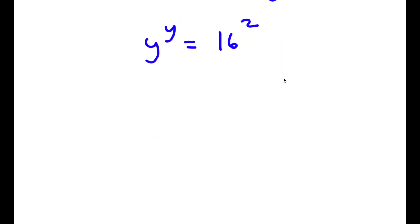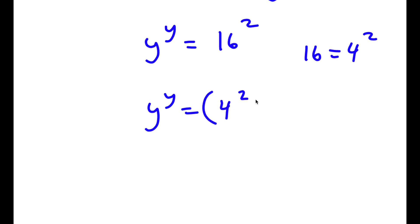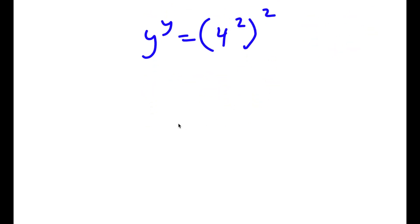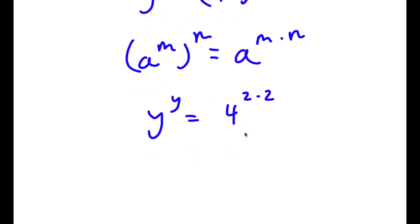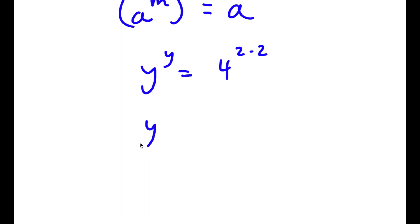Now 16 is the same thing as 4 to the power of 2. So if I substitute 4 to the power of 2 for 16, I get y to the power of y is equal to 4 to the power of 2 to the power of 2. Now if I have a to the power of m to the power of n, this is the same thing as a to the power of m times n. So 4 to the power of 2 to the power of 2 equals 4 to the power of 2 times 2. And 2 times 2 is 4, so I have y to the power of y is equal to 4 to the power of 4.